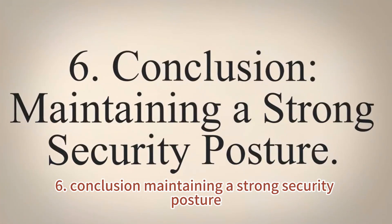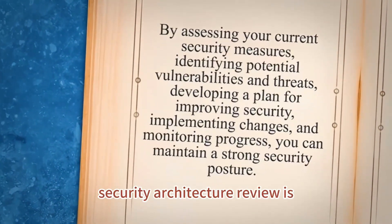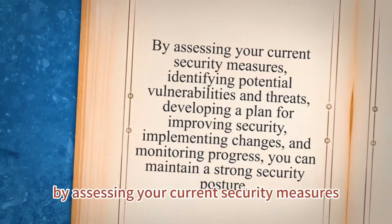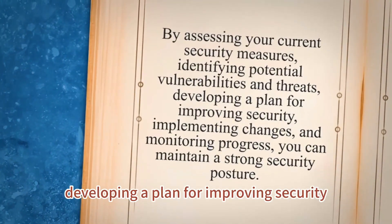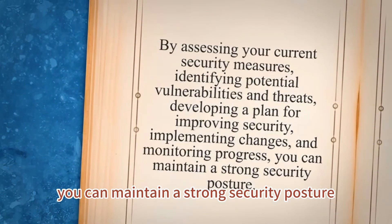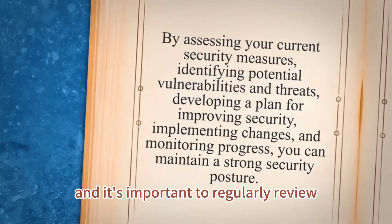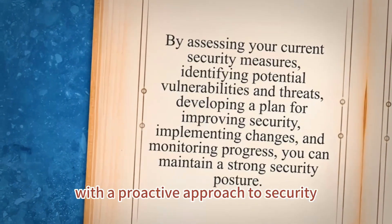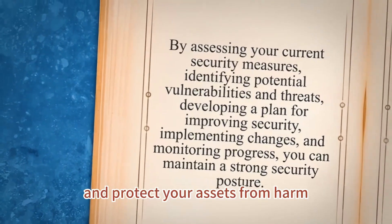Conclusion — maintaining a strong security posture: Conducting a comprehensive security architecture review is crucial for protecting your assets. By assessing your current security measures, identifying potential vulnerabilities and threats, developing a plan for improving security, implementing changes, and monitoring progress, you can maintain a strong security posture. Remember that security is an ongoing process, and it's important to regularly review and update your security measures to stay ahead of emerging threats. With a proactive approach, you can minimize the risk of security breaches and protect your assets from harm.